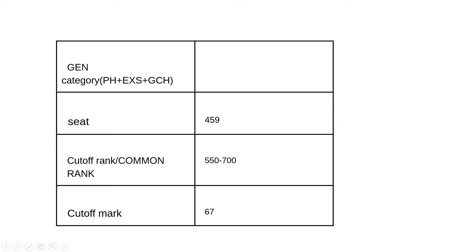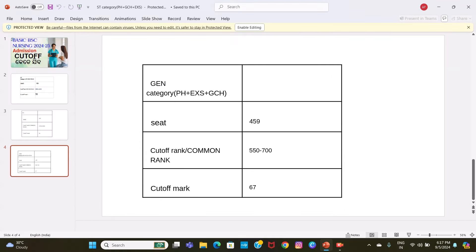We had 100–150 seats, with 70 seats in general. For government admission, if you have marks in the range of 75–700 category score, you can get around 67 marks. That's why we mentioned the average marks needed. Thank you so much for watching.